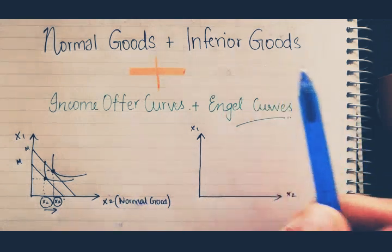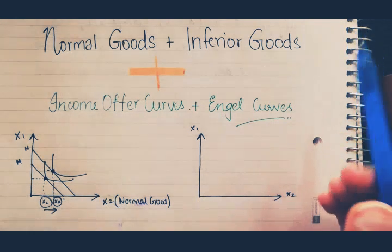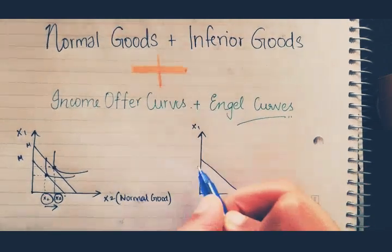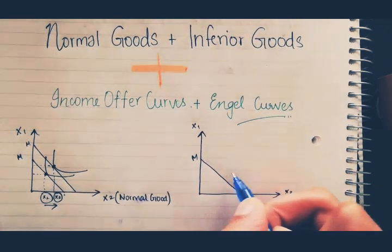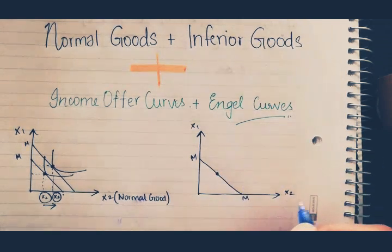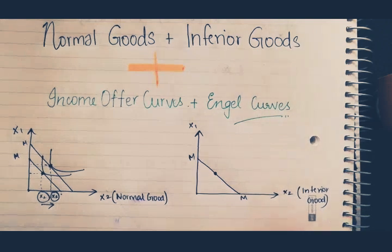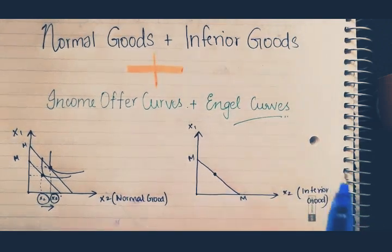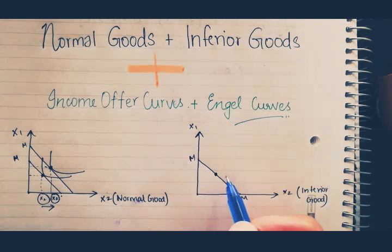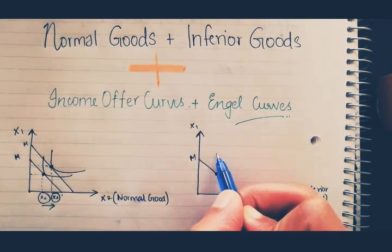Now we're going to observe inferior goods. When your income increases, your demand for that certain good would decrease. Just like before, let's draw our first budget constraint, and we're going to draw our optimum bundle point. We want to consume a certain amount of X2 — we're still going to consider this to be our inferior good. We are going to consume at this point. Right now, we don't have any shifts in income, so we're going to be consuming at this point, because that's all we have. That's what it means — we are consuming this for sustenance. And we're going to draw our indifference curve.